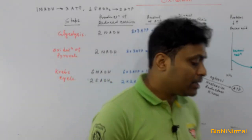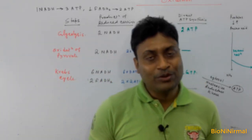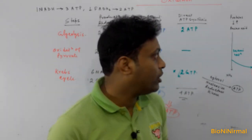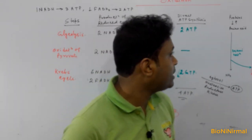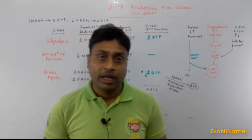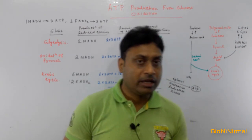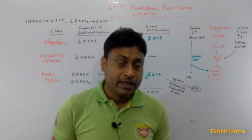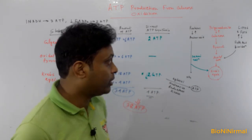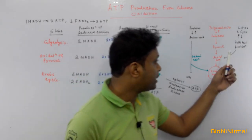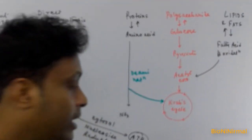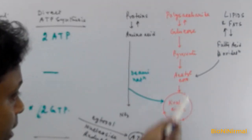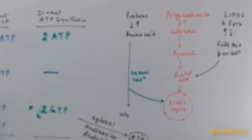Glucose is not the only source of ATP in our body. Lipids, fats, and proteins are also important sources of ATP. Lipids and fats undergo beta oxidation of fatty acids and are transformed into acetyl-CoA, which then enters the Krebs cycle. Polysaccharides can be transformed into glucose, which is converted to pyruvate by glycolysis, and this pyruvate undergoes oxidation to produce acetyl-CoA.